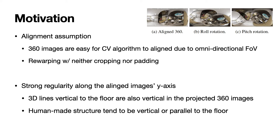There are two motivations behind HohoNet. First, we assume the input image is aligned. Due to the 360 field of view, it is easy for CV algorithms to perform alignment and rewarp the image without neither cropping nor padding. We show an example of an aligned 360 image and the effect of roll and pitch rotation from the aligned view.